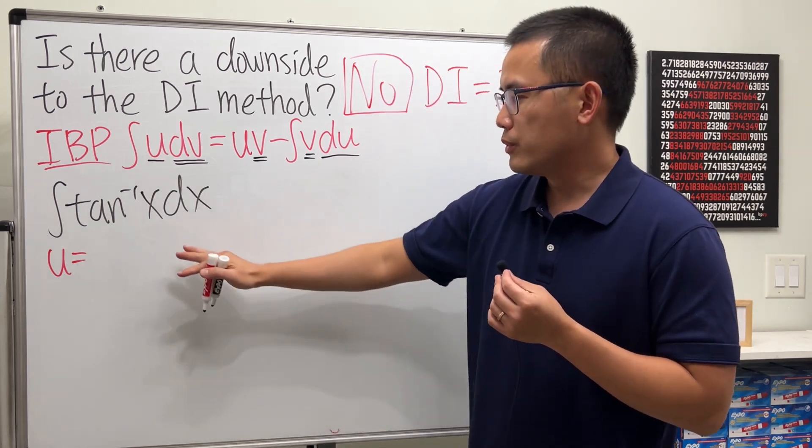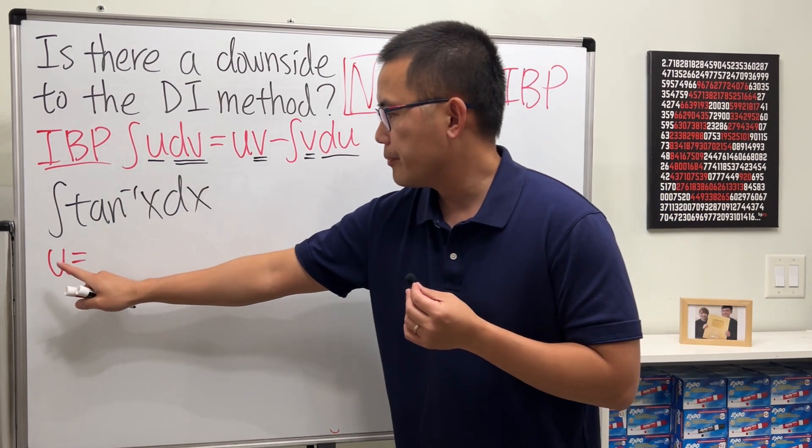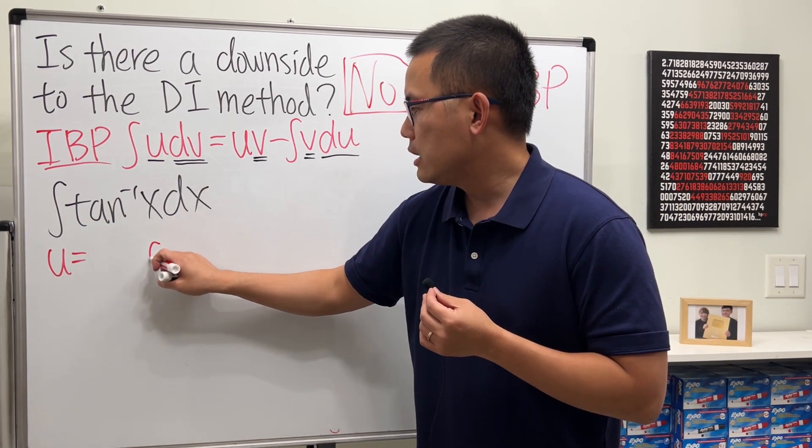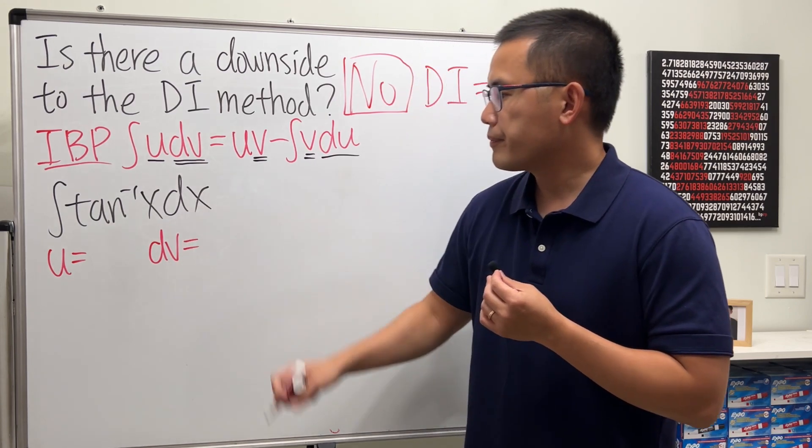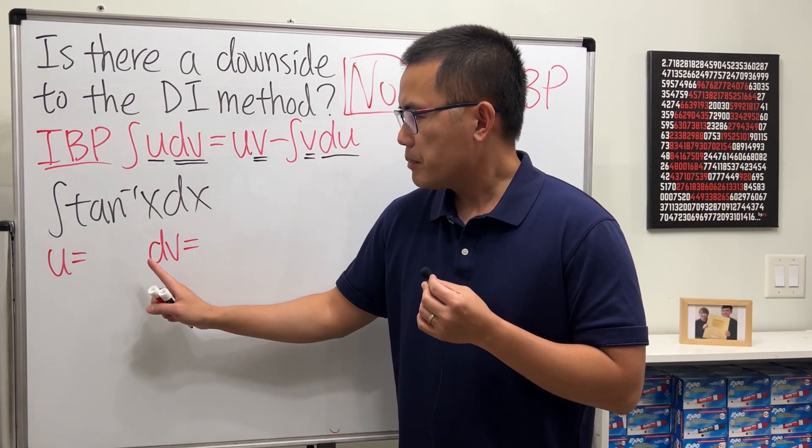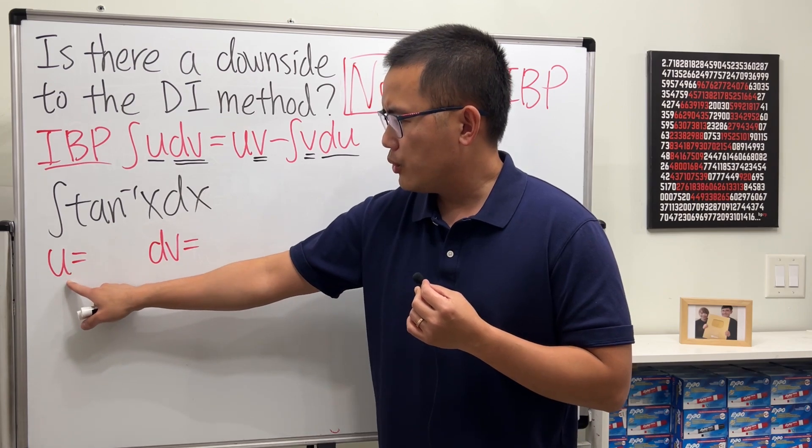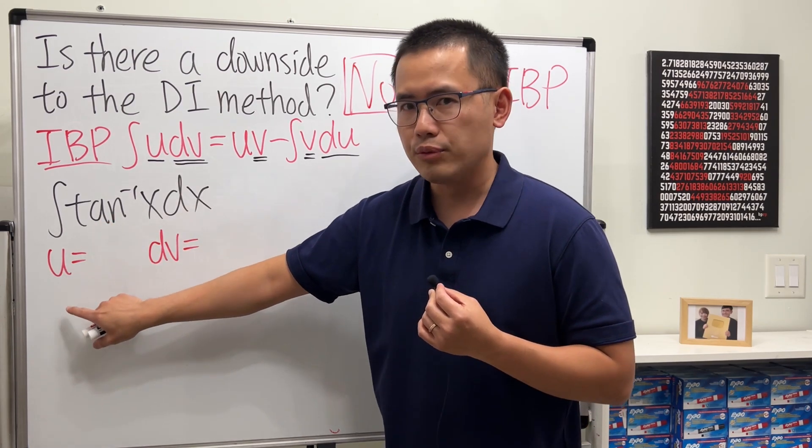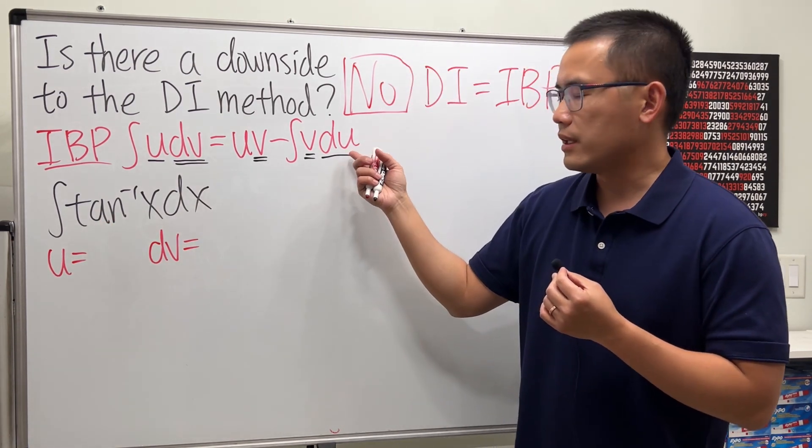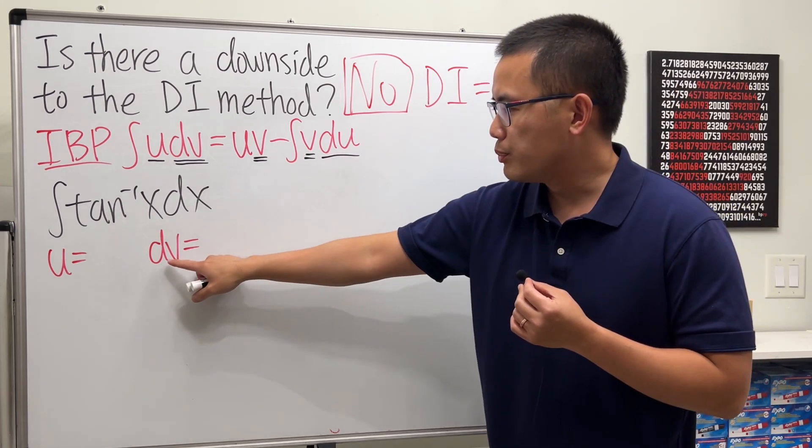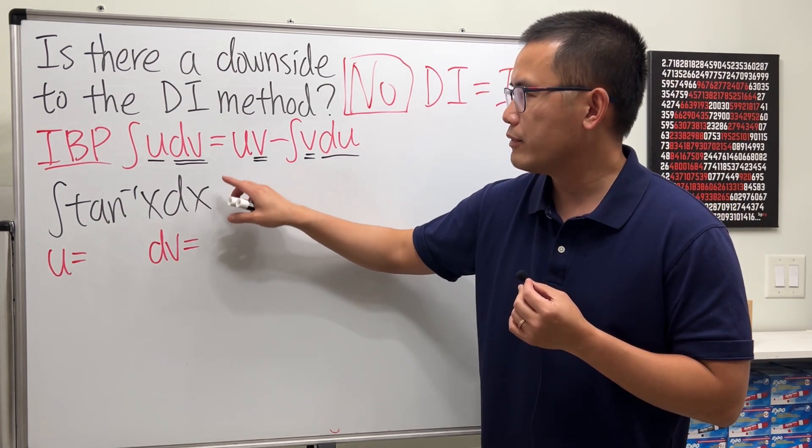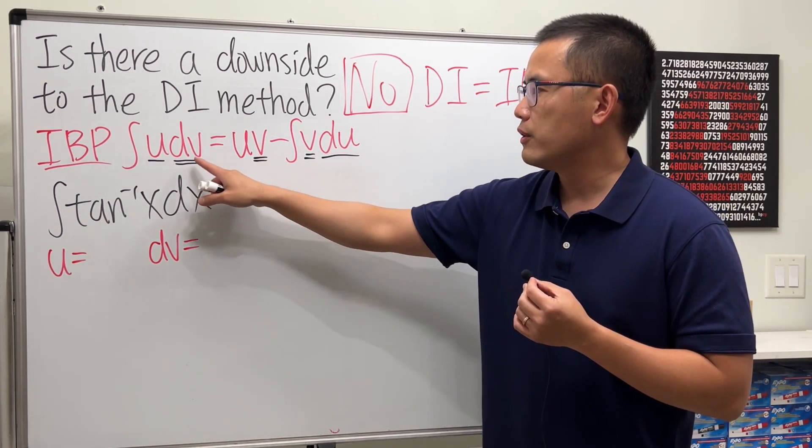And I will recommend you to put down the setup like this. U right here and DV right here. And remember, for U, once you put it here, you will have to differentiate it so you can get DU. And once you put down something for DV, you will have to integrate it so you can get from DV to V.